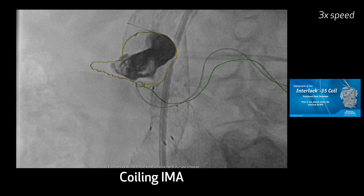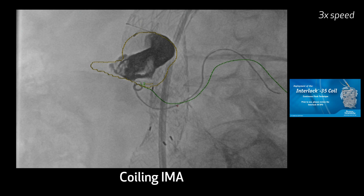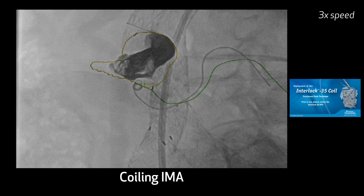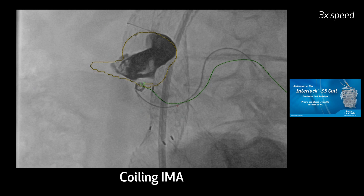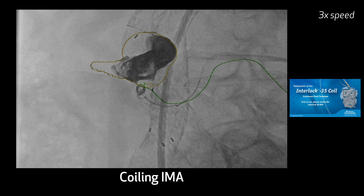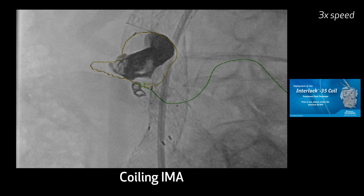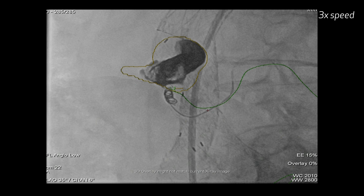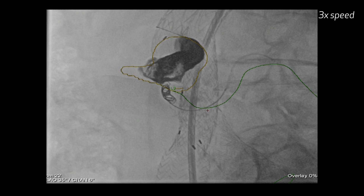Now we're starting to drop these coils in. These are interlock coils, probably five or six millimeter coils — we use relatively short ones. I don't want to put a real long one in there; I'd rather put two or three in so we have control over it. It's always the last coil we put in that gets you in trouble. You're kind of pulling the microcatheter back in advance. These are basically 0.018 coils. And that's exactly what you want to see — you want to see it coiling up like that.